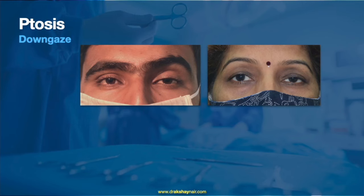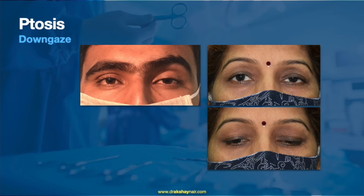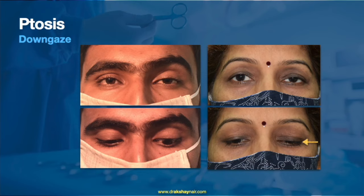Ptosis measurements in down gaze are very important. In two patients with ptosis, the patient on the right shows that on down gaze the palpable fissure height in the ptotic eye is lesser compared to the normal eye. This is because the levator muscle is thinned out and stretched, allowing it to travel that distance and fall lower than the normal eyelid. In contrast, in congenital ptosis where the muscle is fibrosed, contracted, and infiltrated with fat, the palpable fissure height in down gaze is higher than the normal eyelid. This gives an initial clue as to the likely etiology.